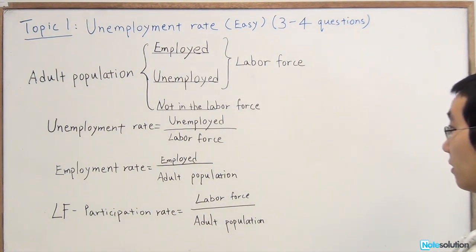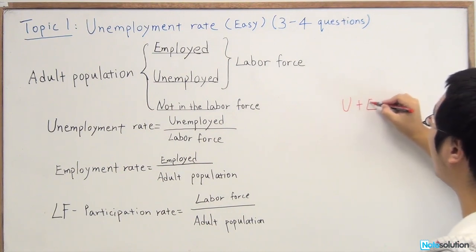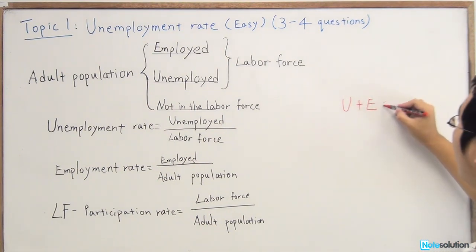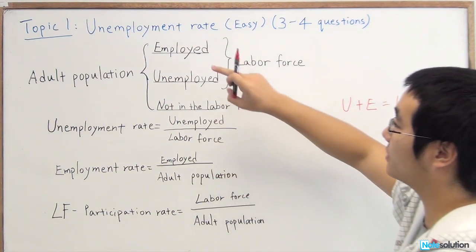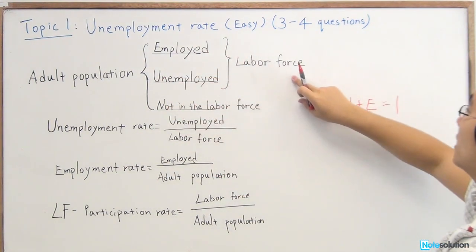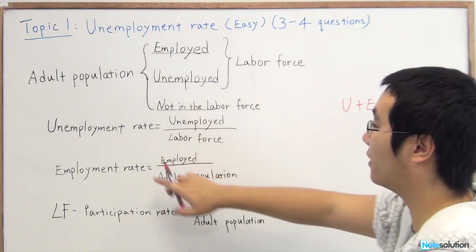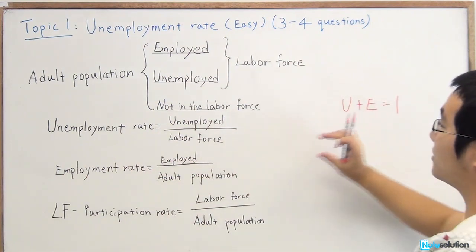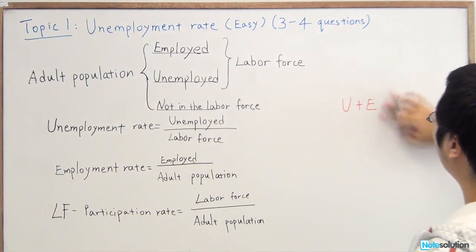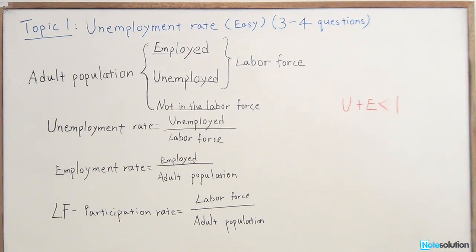In general, we think that unemployment rate plus the employment rate is supposed to equal one. But since the adult population is in general larger than the labor force, since the denominator is increasing, the value of the employment rate is actually smaller. So instead of equaling one, it's actually should be smaller than one.